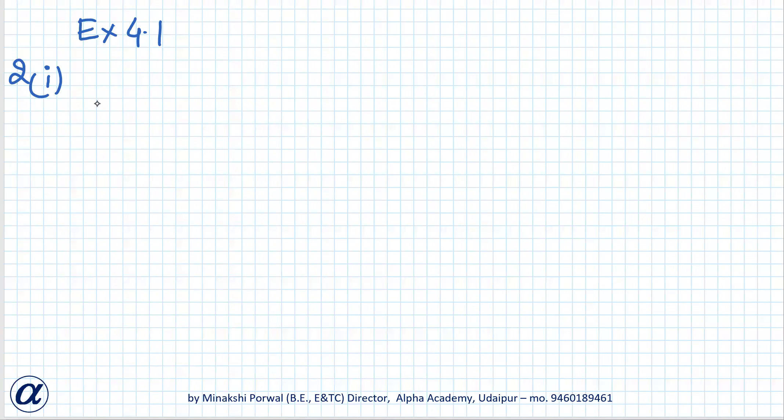Question number 2, first part: The area of a rectangular plot is 528 square metres. The length of the plot is 1 more than twice its breadth. We need to find the length and breadth.